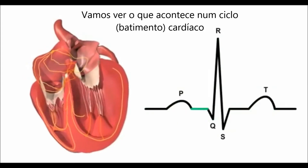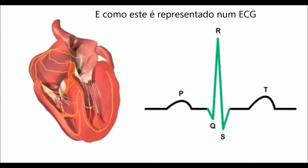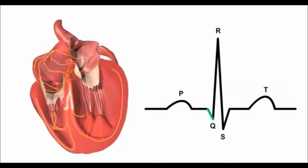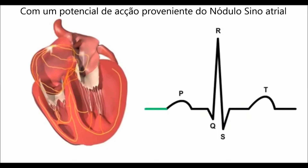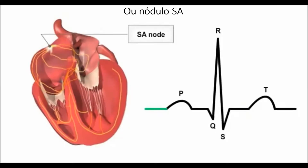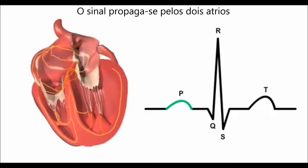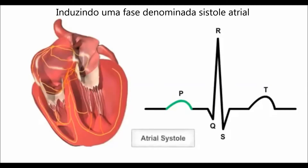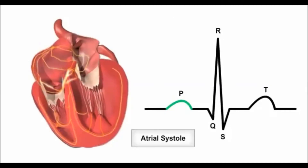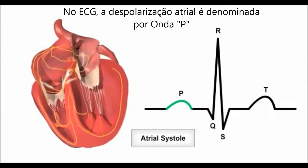Let's look at what happens during a single beat of the heart and how these events are depicted on an ECG. In a normal heart, each beat begins in the right atrium with an action potential signal from the sinoatrial, or SA, node — the heart's natural pacemaker. The signal spreads across both atria, causing the muscle cells to depolarize and contract, inducing a phase known as atrial systole. On the ECG, this atrial depolarization is represented by the P wave.